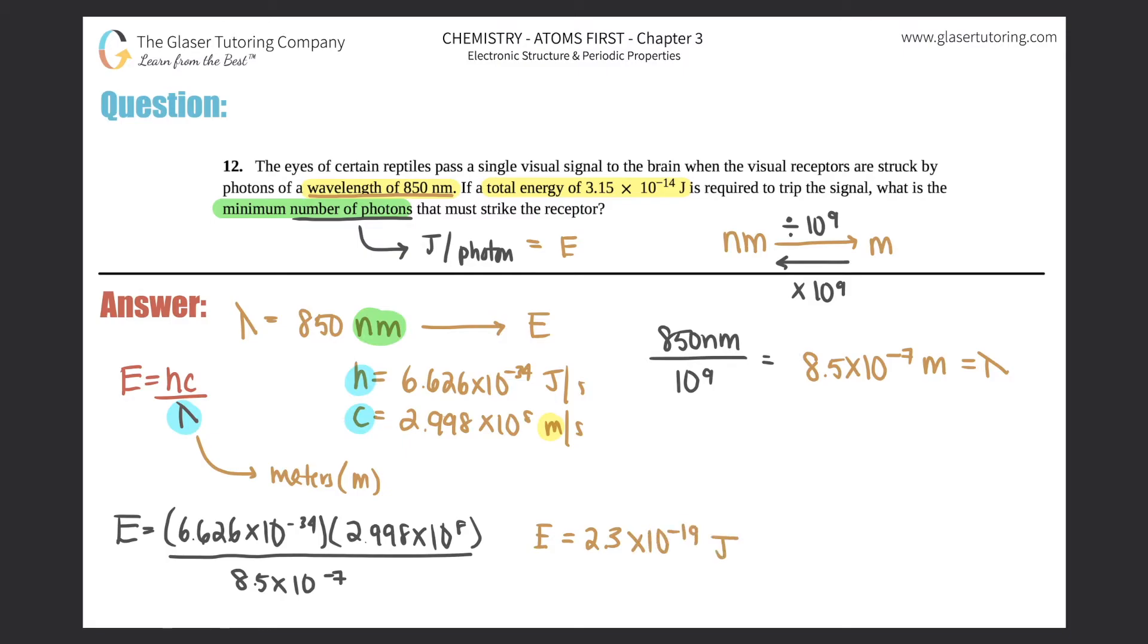Now remember, whenever you calculate this energy when you're using this whole formula, it's always joules per photon. So that's how much energy is needed for one photon.